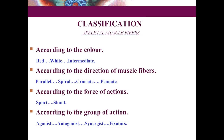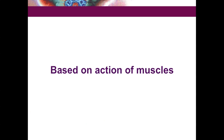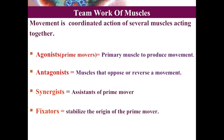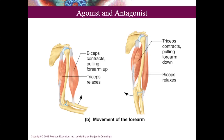Classification based on group of action: muscles always work in a team. Based on their teamwork, muscles are classified as agonist, antagonist, synergist, and fixators. Agonists are muscles producing the prime movement, such as flexion. Antagonists produce the opposing movement, such as extension. When an agonist contracts, the antagonist must relax for smooth movement to occur, and vice versa.